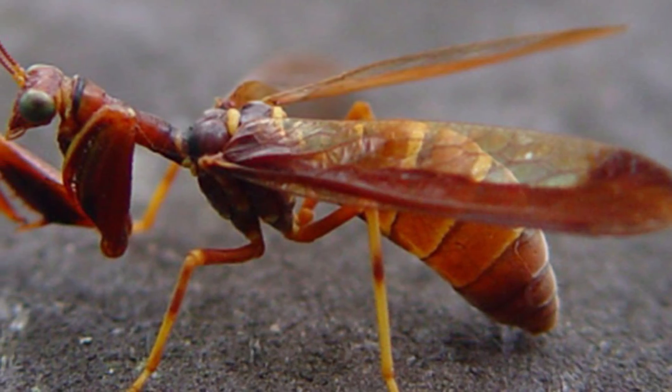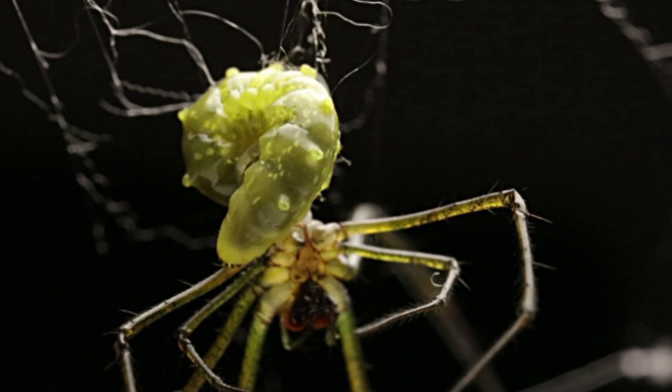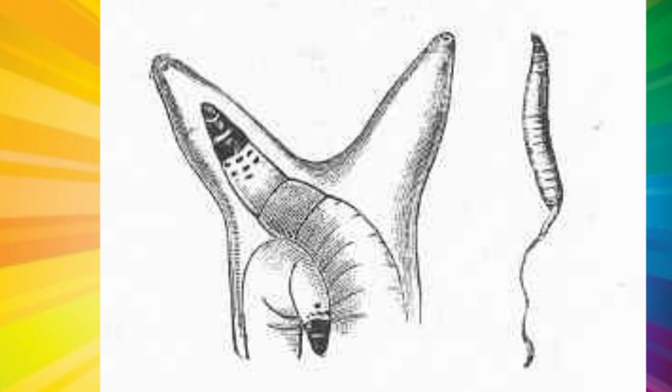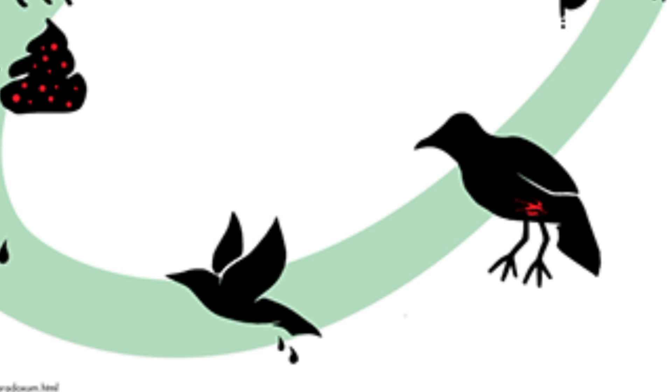Another example: the wasp Hymenoepimecis argyraphaga — that's an impossible pronunciation — which immobilizes the spider to leave its larvae on it. The larvae uses chemicals ordering the spider to build a nest and stay in it until the larva is nourished by its body. A third example: the Leucochloridium paradoxum worm, which infects the eyes of snails and forces them to expose themselves to sunlight, and therefore the danger of being eaten by a bird. In this way, the worm is able to reach the intestine of the bird and deposit its eggs.